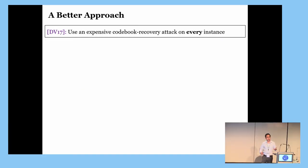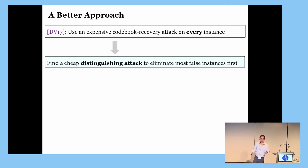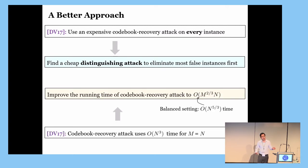So, first of all, recall that DV uses an expensive codebook recovery attack on every single instance. This is wasteful because all but one instances are false. So, one better find a cheap distinguishing attack to eliminate most of the false instances first. And then later, run the codebook recovery attack on the remaining one. But even then, this is expensive because DB's recovery attack is expensive using N-cubed time. So, we therefore develop an improved attack using just N-to-the-five-thirds time. And it works in the general case as well.